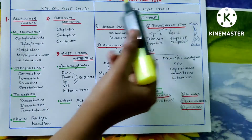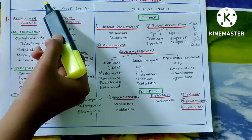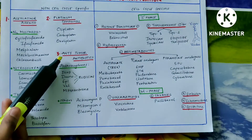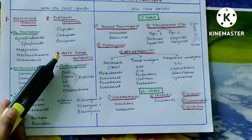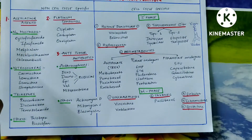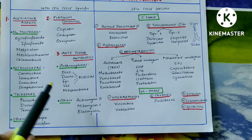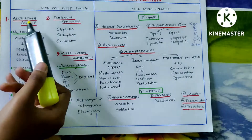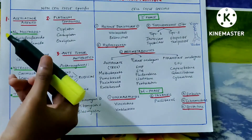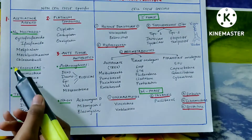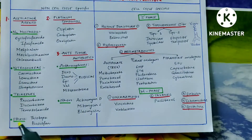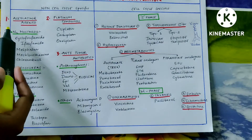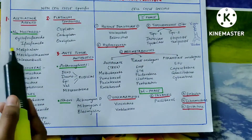Non-cell cycle specific drugs include alkylating agents, platinum compounds, and anti-tumor antibiotics. Alkylating agents are further divided into nitrogen mustards, nitrosoureas, triazines, and others.